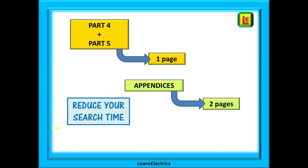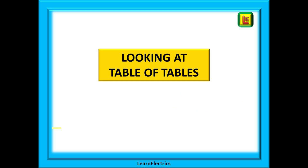The appendices are another big section, almost 200 pages, and these tables are covered by just two pages in table of tables. It's much easier to start your search with just one or two pages than several hundred. We can look at table of tables now — understanding how they are laid out is very important. If you want to make things easier in the exam, get to know table of tables.